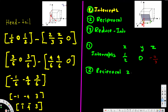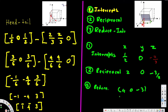The reciprocal gives us 2 for x, 0 for y (reciprocal of infinity), and negative 3/2 for z. Now we reduce by multiplying everything by 2, giving us 4, 0, negative 3. When expressing Miller indices, a negative value gets a bar on top, so the final answer is 4 0 3̄.